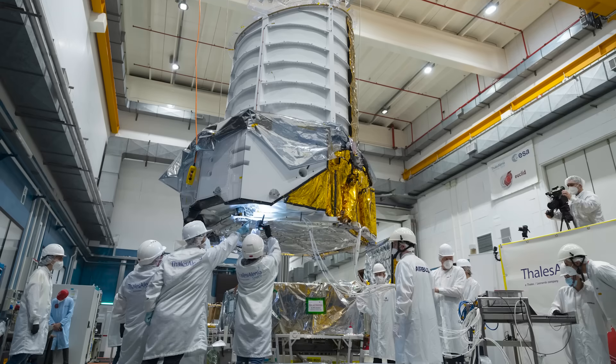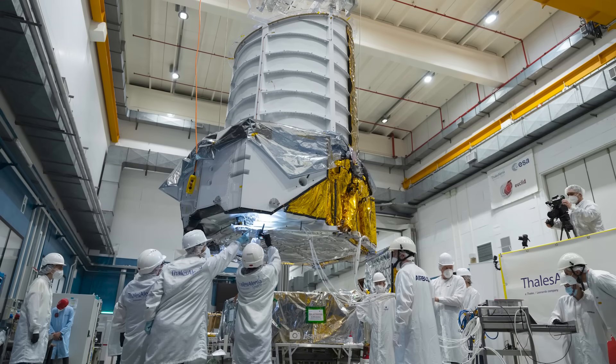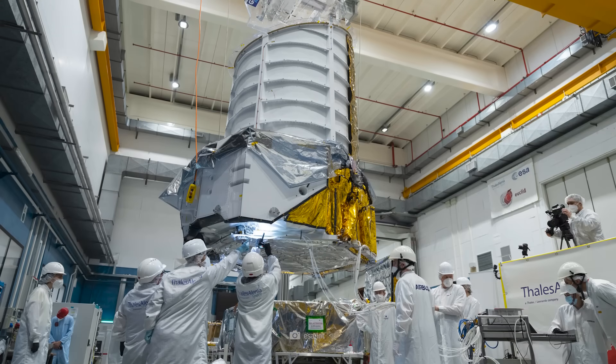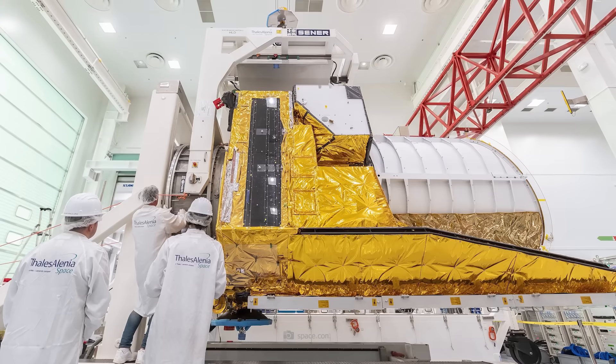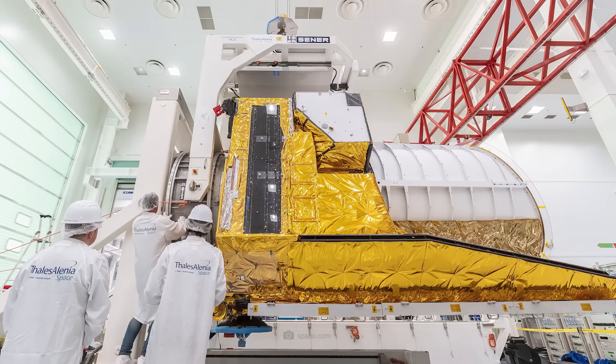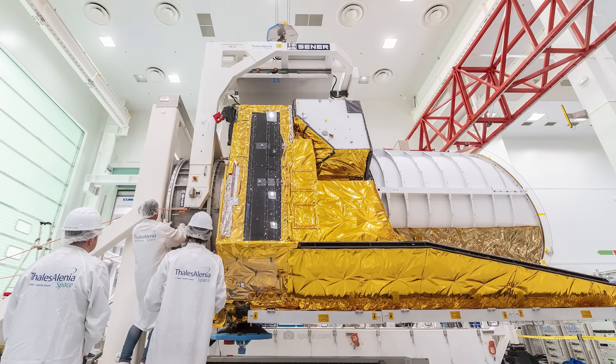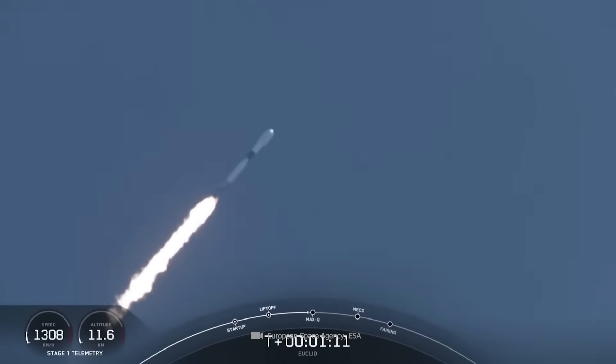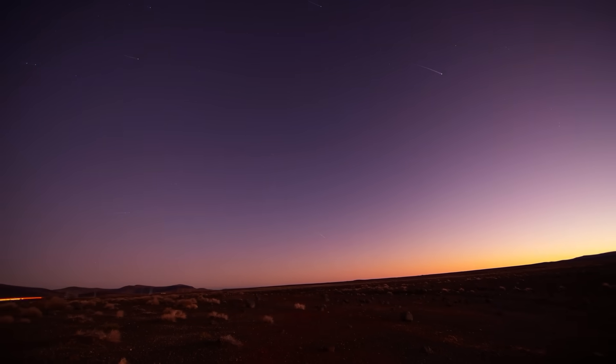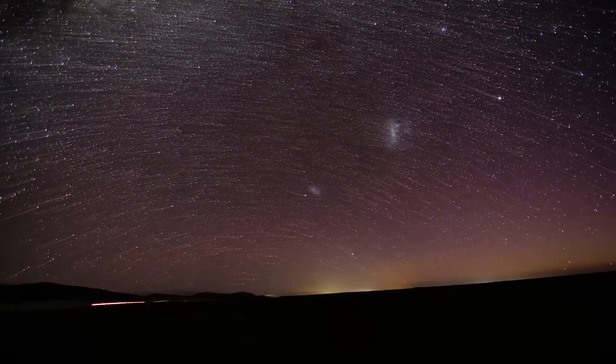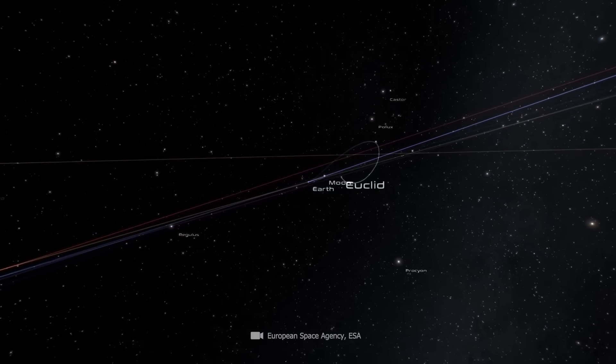Euclid is a mission that has been fully funded and developed by the European Space Agency, or ESA. Europe's best scientists and engineers have spent years working on this engineering masterpiece. On July 1, 2023, the telescope launched into space aboard a SpaceX Falcon 9 rocket and reached its destination, the second Lagrange point, about 1.5 million kilometers from Earth, on July 28.